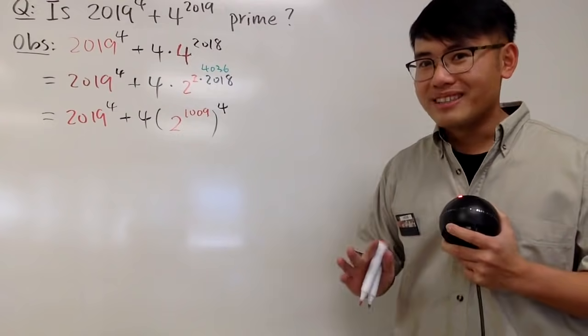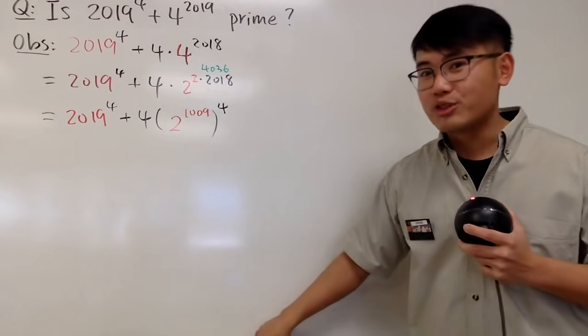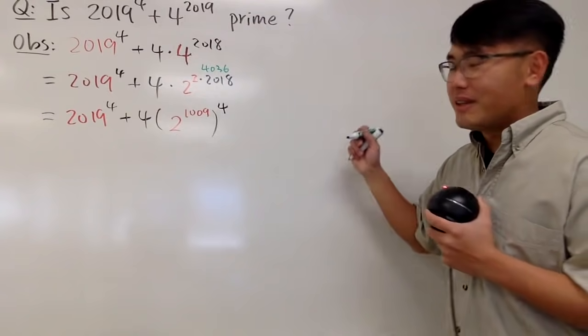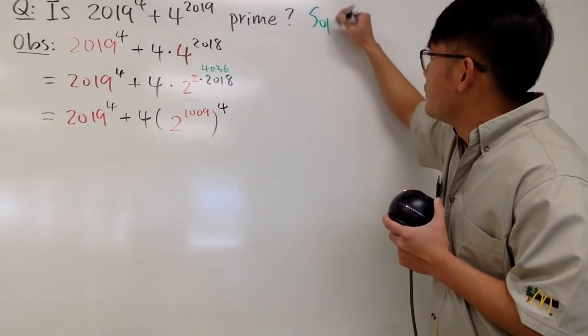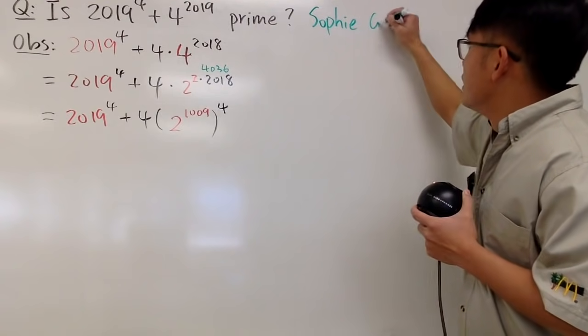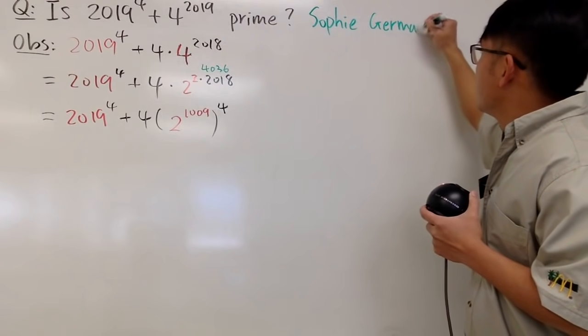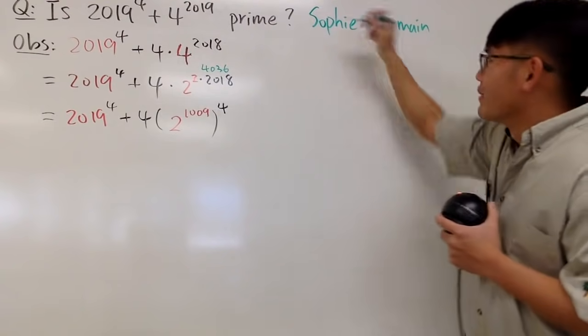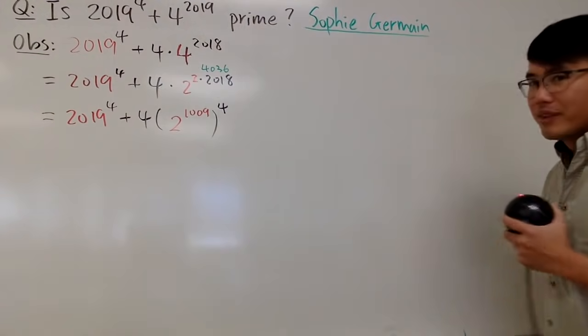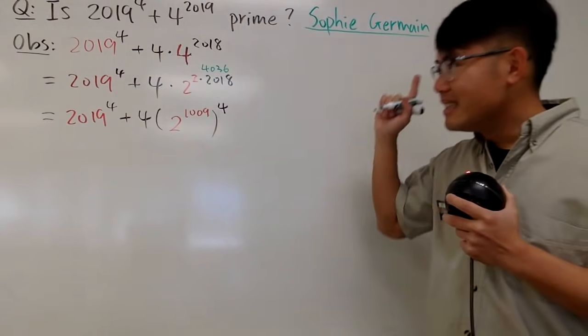Well, I'll actually show you guys the general case, because the general case is actually pretty famous. And this right here actually has a name. This is called the Sophie Germain identity. And, of course, this is the name of the mathematician.